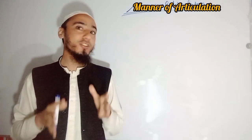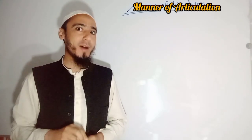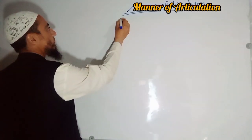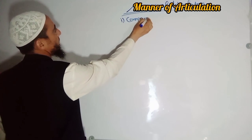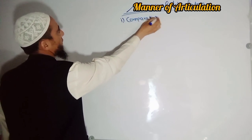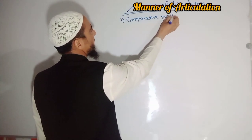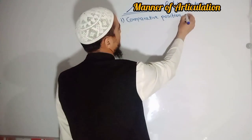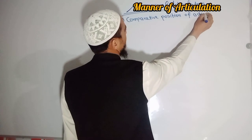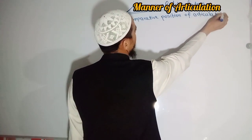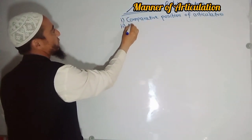Whenever we are talking about the manner of articulation, two points should be in our mind. The first point is the comparative position of articulators. And the next one is the nature of obstruction.